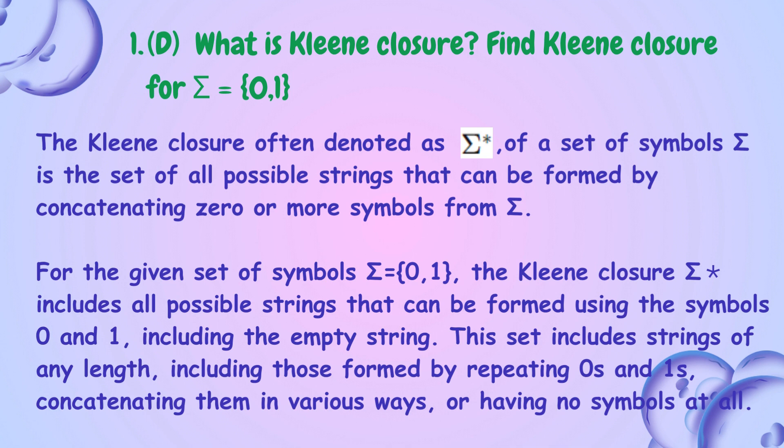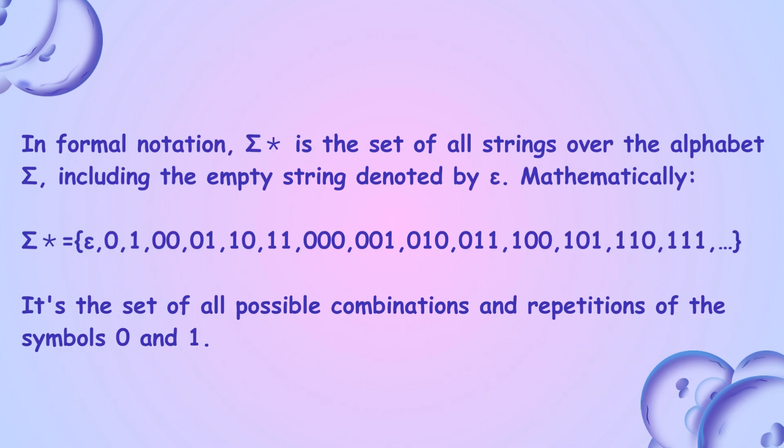This set includes strings of any length, including those formed by repeating 0s and 1s, concatenating them in various ways, or having no symbols at all. In formal notation, sigma-asterisk is the set of all strings over the alphabet sigma, including the empty string denoted by epsilon. Mathematically, it is the set of all possible combinations and repetitions of the symbols 0 and 1.